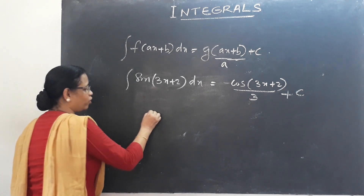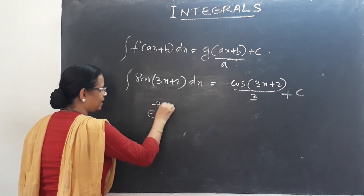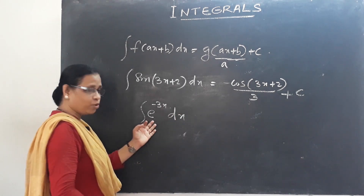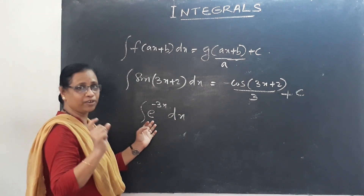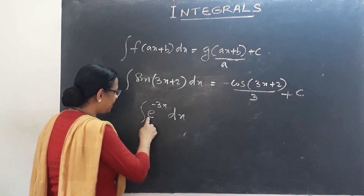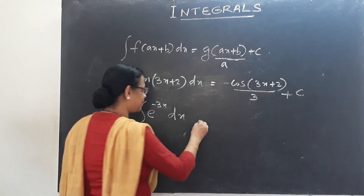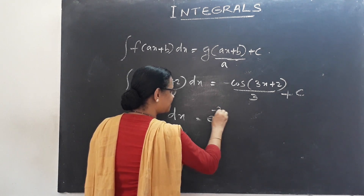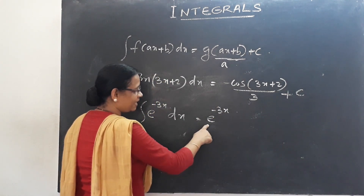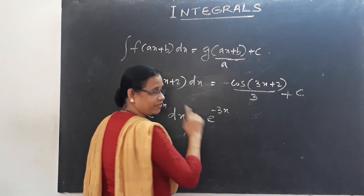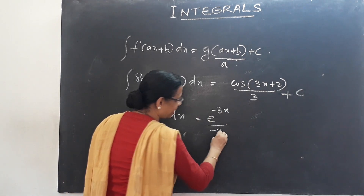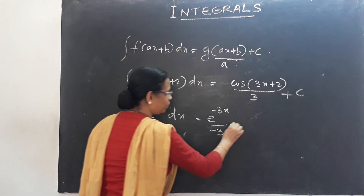There is another problem: e raised to minus 3x. I will integrate this using the chain rule, a differentiation rule. The integral of e^(−3x) is e^(−3x), and we divide by the coefficient of x, which is minus 3, giving e^(−3x)/(−3) plus c.